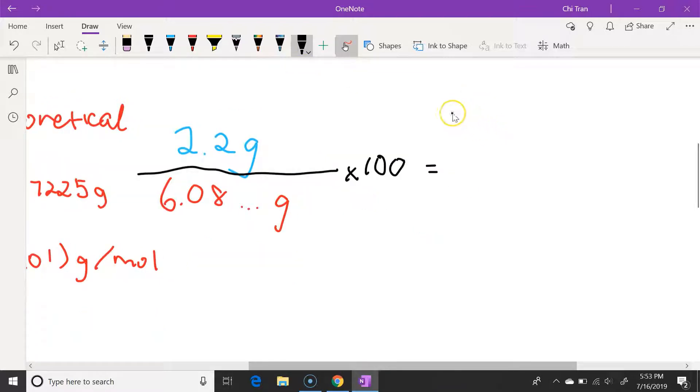And in our question, the value given is written to two significant figures. So our answer would be 36%.